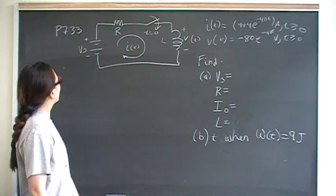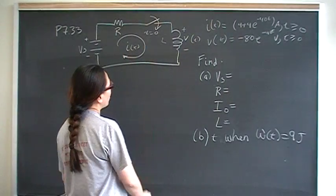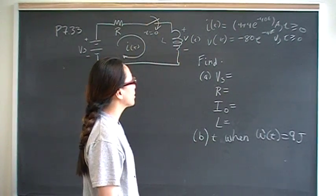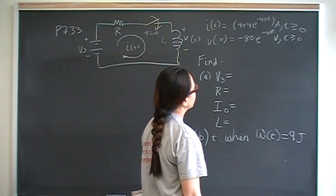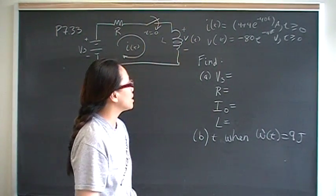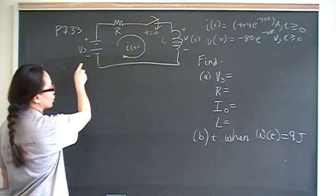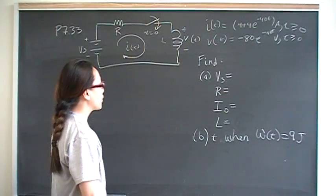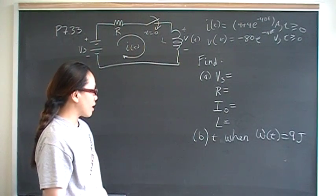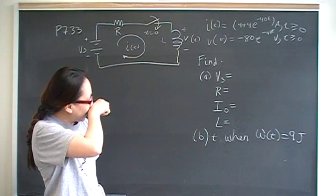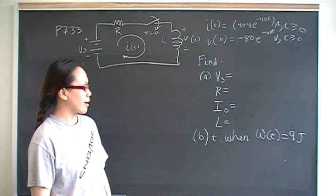This is problem 33 from chapter 7. It's a series RL circuit where the switch is open before time 0 and closed after time 0. We're given the current as 4 plus 4e to the negative 40T, and the voltage across the inductor as negative 80e to the negative 40T volts. We want to find the source voltage, the resistor value, the initial current in the inductor, the inductance for part A, and the time when energy stored in the inductor is down to 9 joules for part B.